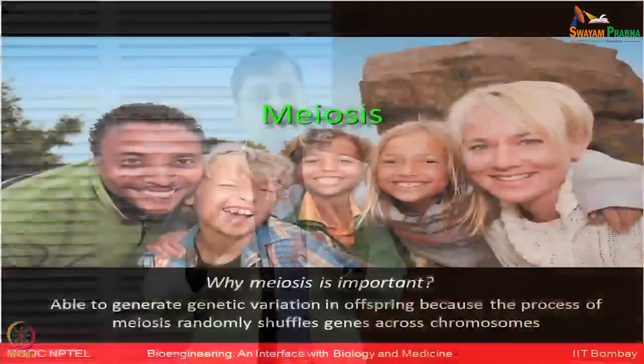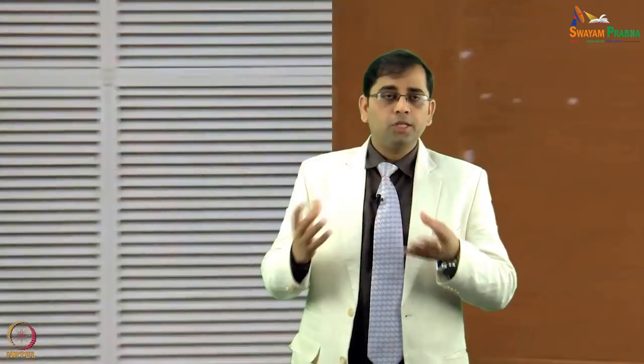The question is: where does this genetic variability come from? The ability to generate genetic variations in children comes because the process of meiosis happens randomly, with a lot of gene shuffling across chromosomes. This ensures that each one of us is very unique in our appearance, identity, and entire genetic composition.